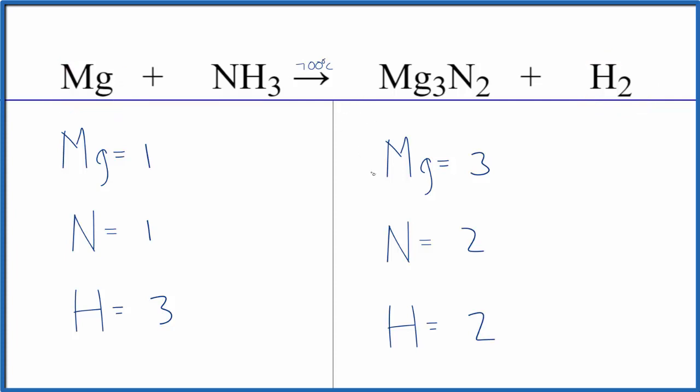So that means let's start with the nitrogen here. Let's put a two in front of the ammonia. One times two, that'll give us two of those. We balance these, and then the three times two, that'll give us six, but that's easy to fix.